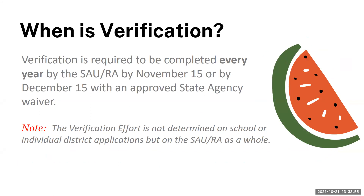Verification is required to be completed by every SAU or RA by November 15, or by December 15 with an approved state agency waiver. An email has been sent out by our office that includes the verification effort plan of action form that needs to be completed by each SAU and emailed to Tam Fiener in our office. The form can be found on the office of nutrition website under the NSLP link in the verification section. Remember, the verification effort is determined on the SAU or RA as a whole unit, not on a school or individual district basis.